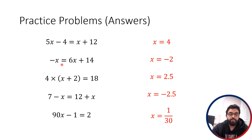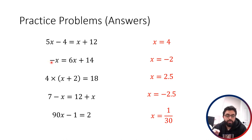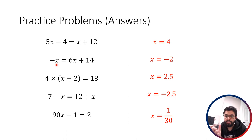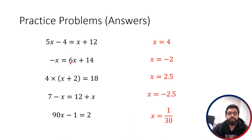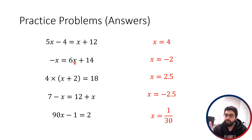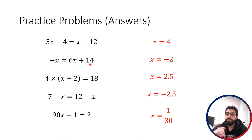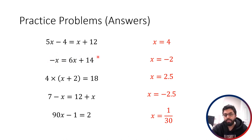For the second one, x = -2. On the left side there's a negative sign in front of x, so negative times -2 is positive 2 — this is like -1 times -2, which equals positive 2. On the right side, 6 times -2 is -12, and -12 plus 14 is +2. So we've got positive 2 on both the left and right sides. We're good here.